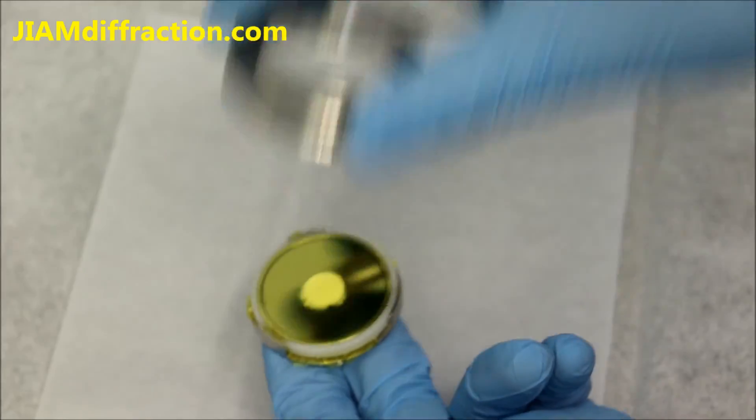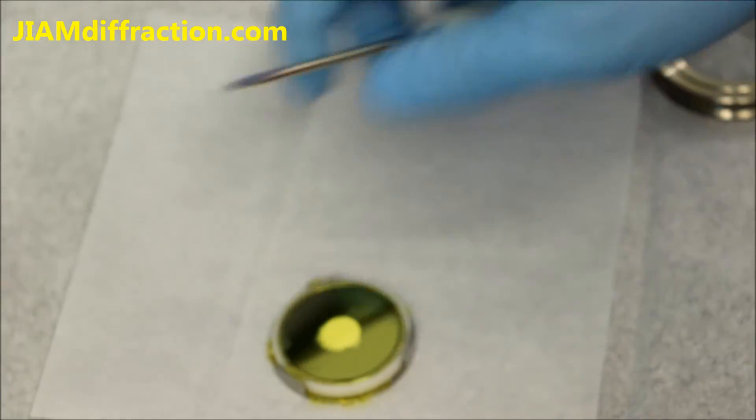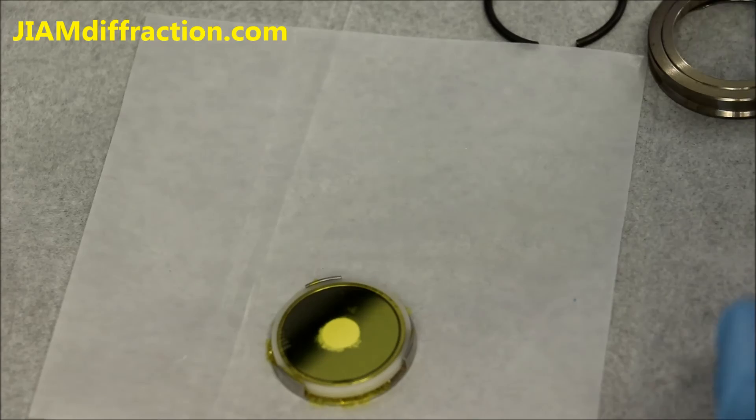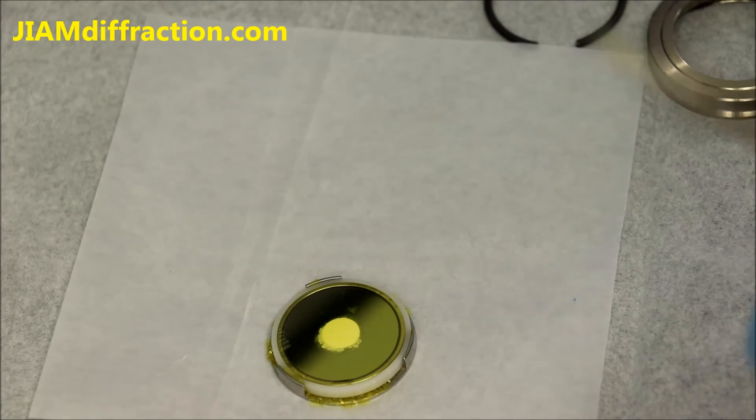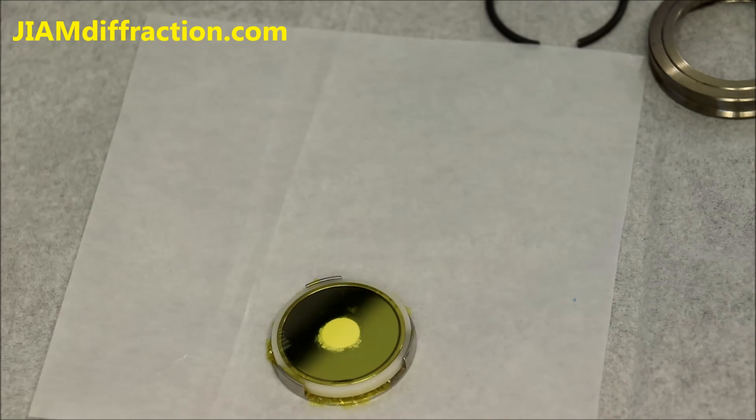You can then remove the sample holder, take that ring out, preferably not with a screwdriver, you want to use something a little bit softer so you don't damage the ring.